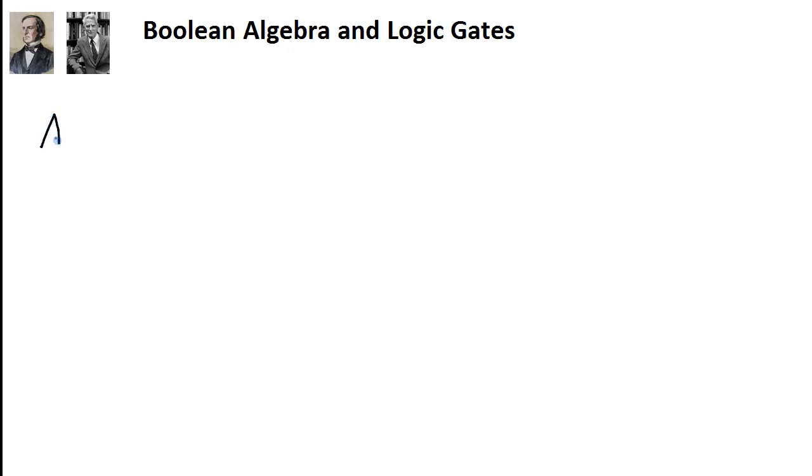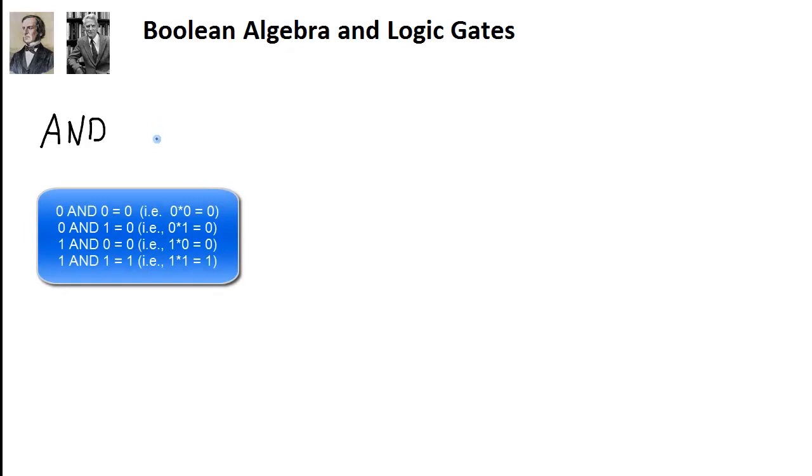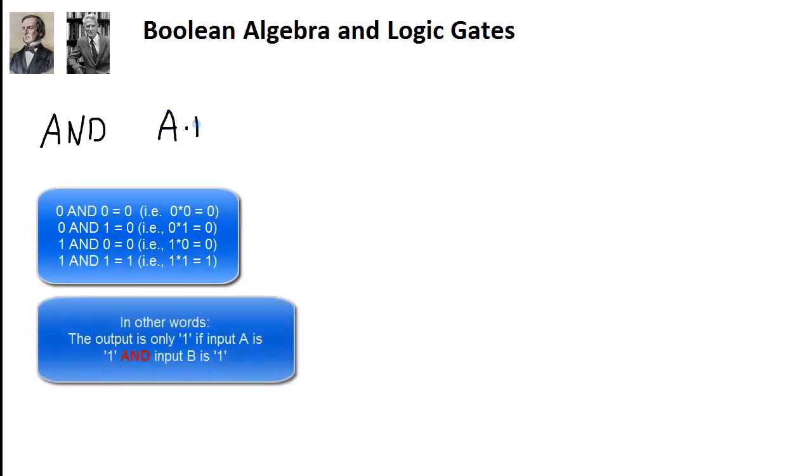The first operation is called the AND operation, and the AND operation can be thought of as a Boolean algebra multiplication, and one way that it can be written out is like this: A gets ANDed with B to give the value of X. So A has a logical value of 1 or 0, B has a logical value of 1 or 0. Combine them together through the AND operation, that will give you a value of 1 or 0.